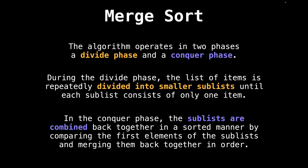Merge sort operates in two phases, a divide phase followed by a conquer phase. During the divide phase, the list of items is repeatedly divided into smaller sublists until each sublist consists of only one item. In the conquer phase, the sublists are combined back together in a sorted manner by comparing the first elements of the sublists and merging them back together in order. This process is repeated until all the sublists have been merged back into a single sorted list.